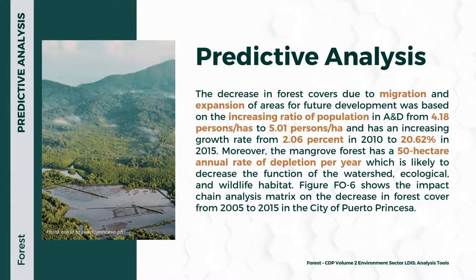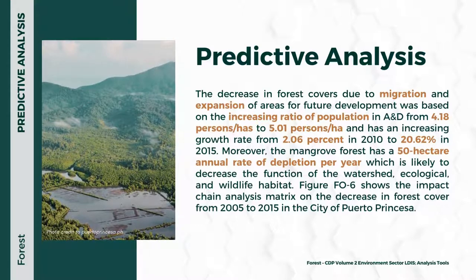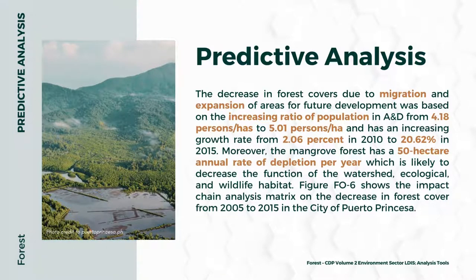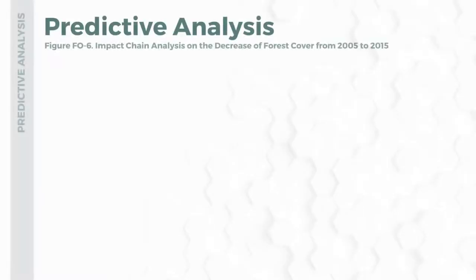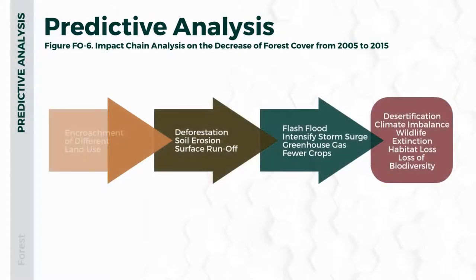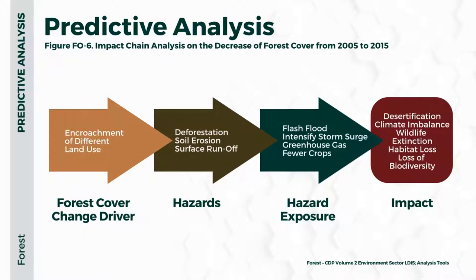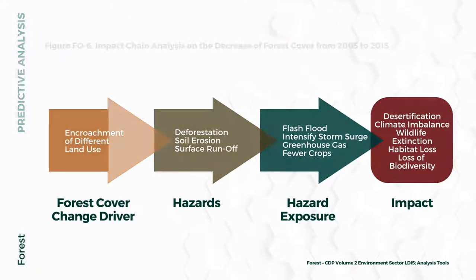Moreover, the mangrove forest has a 50-hectare annual rate of depletion per year, which is likely to decrease the function of the watershed, ecological systems, and wildlife habitat. The impact chain analysis on the decrease of forest cover from 2005 to 2015 indicates it started with a forest cover change driver pertaining to the encroachment of different land uses, leading to hazards specifically deforestation, soil erosion, and surface runoff, which leads to hazard exposure including flash floods, intensifying storm surge, and greenhouse gas, and ultimately to desertification, climate imbalance, wildlife extinction, habitat loss, and loss of biodiversity.